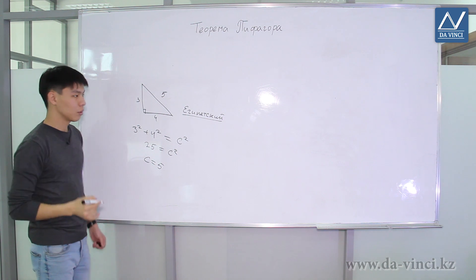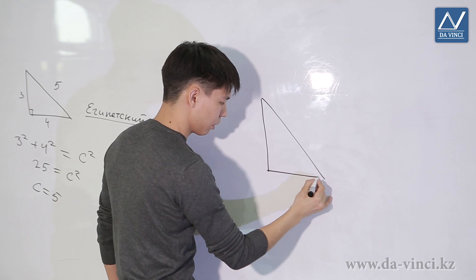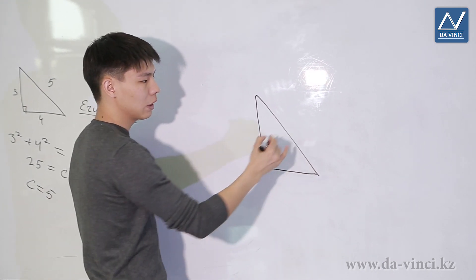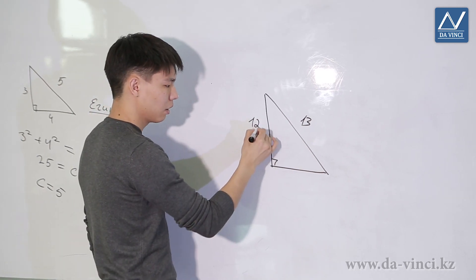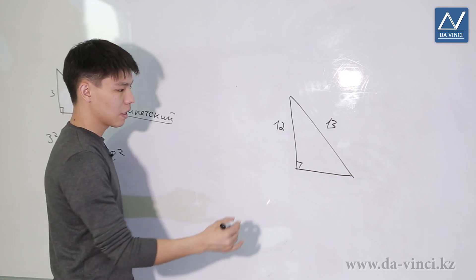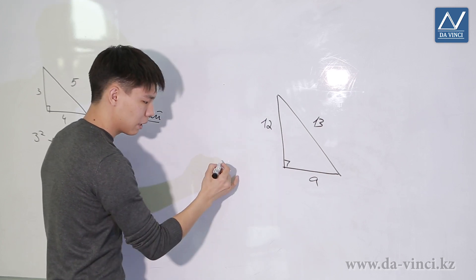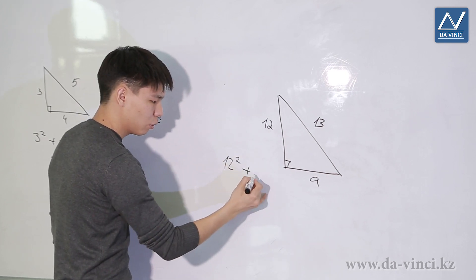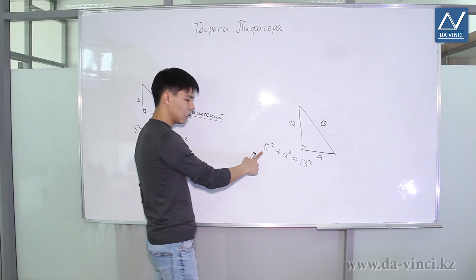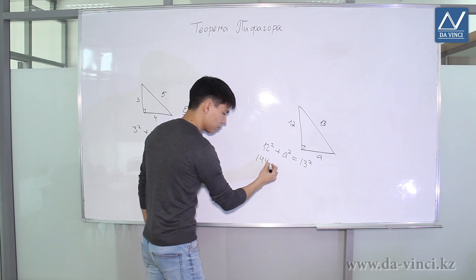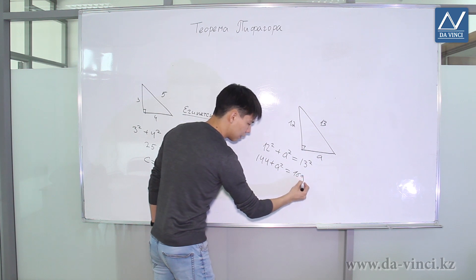Let's take a look at another example. Let's say we have a right triangle again. This time we know the hypotenuse, 13, and we know one leg, let's say 12. It is required to find another leg. Let's mark it as A and use the Pythagorean theorem again. 12 squared plus A squared equals 13 squared. 12 squared is 144. We leave A squared as it is.